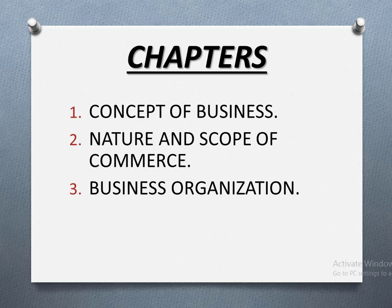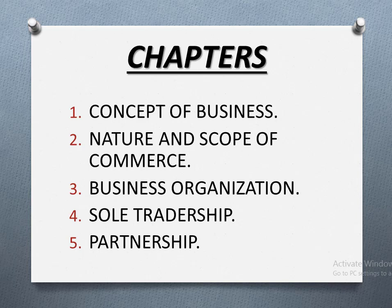پھر آتا ہے بزنس آرگنیزیشنز، جس میں مختلف قسم کے کاروباری ادارے بیان کیے گئے ہیں۔ پھر آتا ہے سول ٹریڈرشپ — واحد ملکیتی کاروبار کیسے کیا جاتا ہے اور اس کی نوعیت کیا ہوتی ہے۔ اگلا چیپٹر ہے پارٹنرشپ — دو یا دو سے زیادہ لوگ مل کے جو کاروبار کرتے ہیں منافع کمانے کے لیے، اسے پارٹنرشپ کہا جاتا ہے۔ یہ سارے چیپٹرز بہت امپورٹنٹ ہیں، ان میں سے سوال آنا لازمی ہے۔